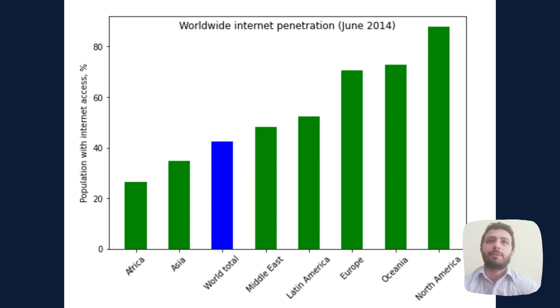The bar glyphs express the quantitative value attribute aligned in the vertical position and the key attribute in the horizontal position, making it easy to look up and compare values between countries and the world total that presents a distinctive color.